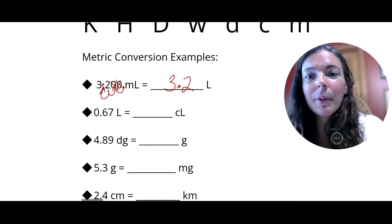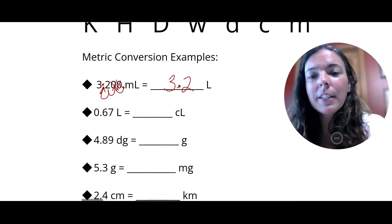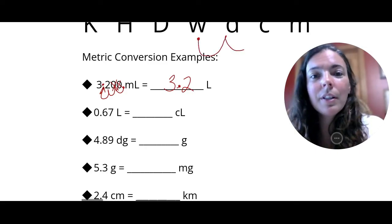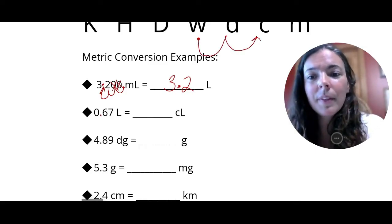Let's try the next one. What if I have to do 0.67 liters to centiliters? Well, I'm starting at my whole unit, my liters and going once, twice to the right. So swoop once, twice to the right, and I would get 67.